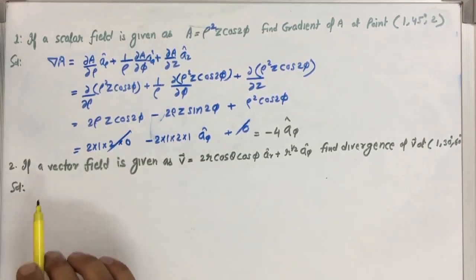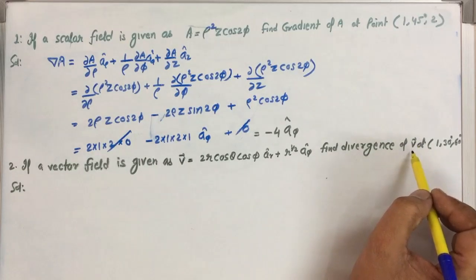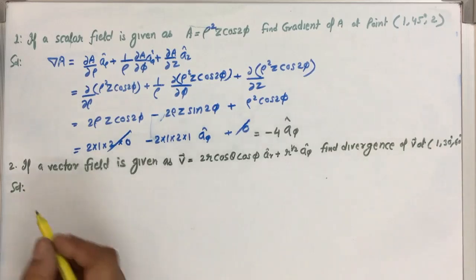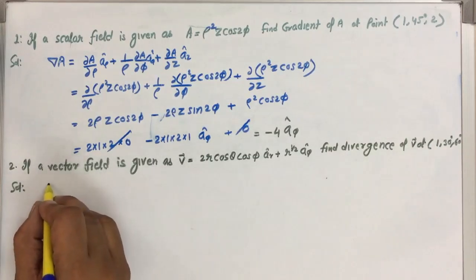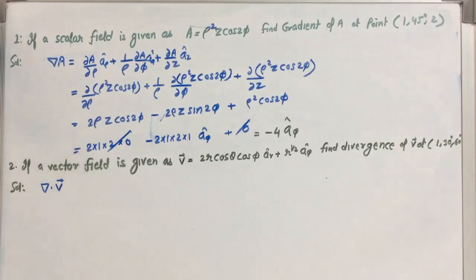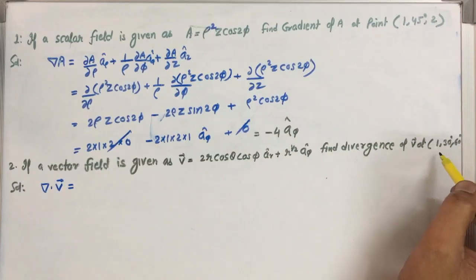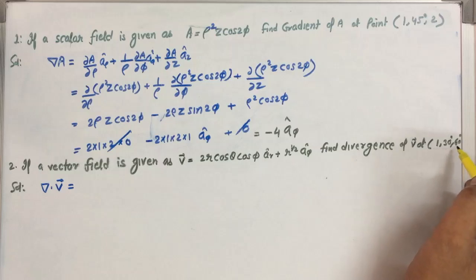From this problem, we find that we have to calculate the divergence of a vector field at this point. The first point is that divergence can be written in a specific form. The second thing is to confirm which coordinate system we are working in. From the point given, it is clear: it is distance, angle, and angle — that is possible in the case of the spherical coordinate system, so R, theta, and phi.